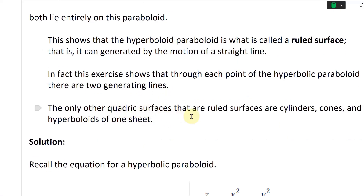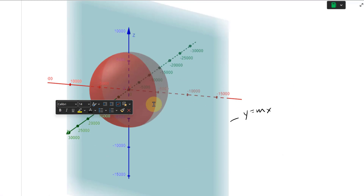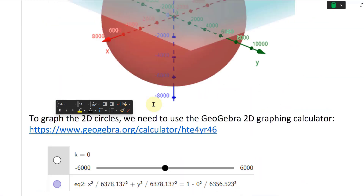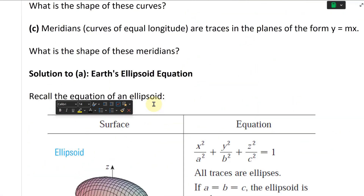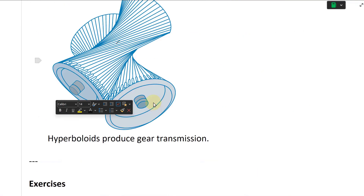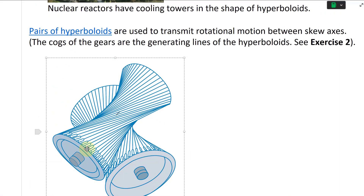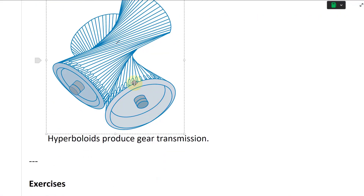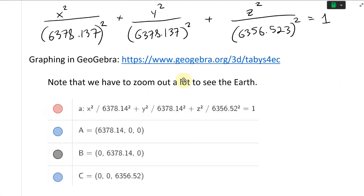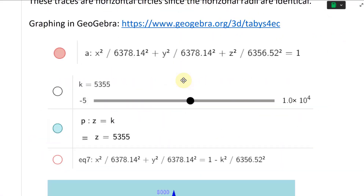The only other quadratic surfaces that are ruled surfaces are cylinders, cones, and hyperboloids of one sheet. And this is the one that was actually the hyperboloid gears. If we go back to the applications, that's this one here — one sheet — and these are all made of straight lines. That's pretty epic stuff, and then you can do rotation and gears and so on.